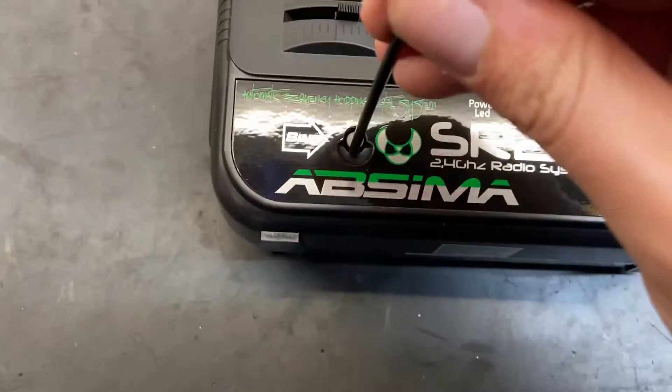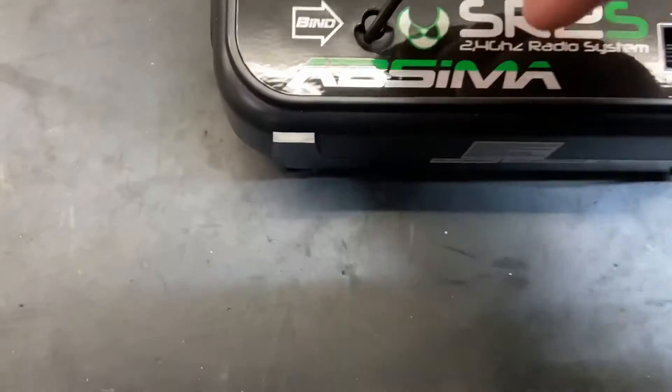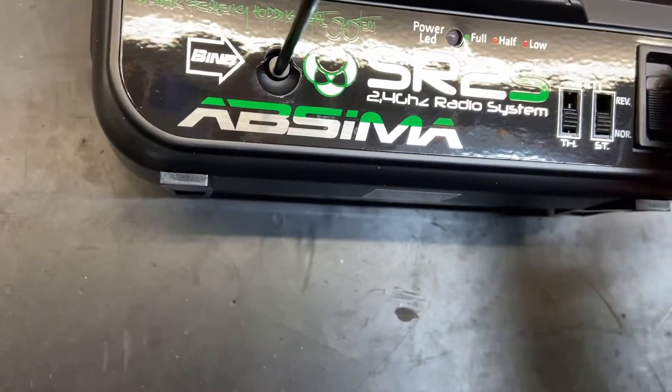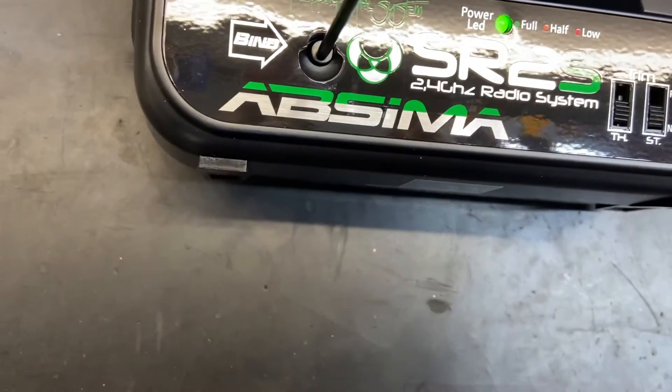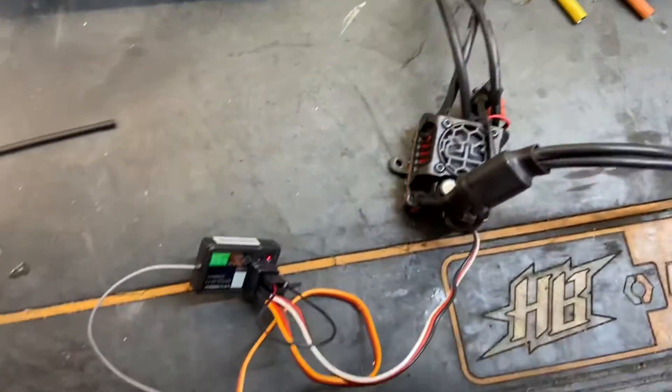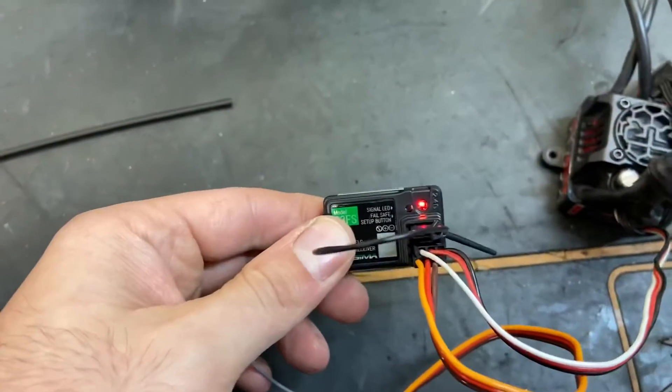So we need to press and hold that. I'm using the aerial straw. While doing so, turn the power to the transmitter on. Once you've done that, let go of the button. Go back to the receiver. The receiver light should be solid.